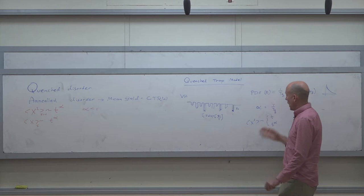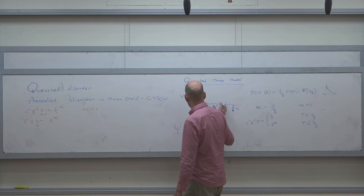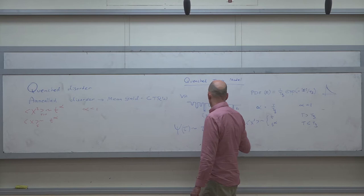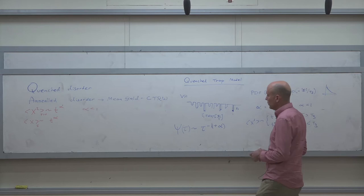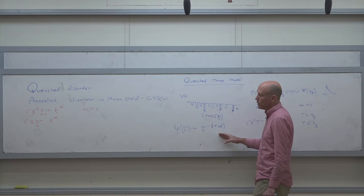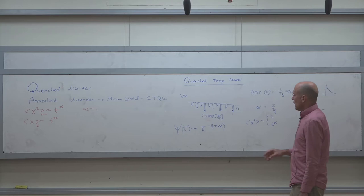What we showed in the previous class is that by averaging, the waiting time PDF for large times decays like a power law with exponent -(1+alpha). This was done by a change of variables: assuming exponential energy distributions and using the Jacobian to find the distribution of tau_i. Alpha again equals T over T_g. When alpha is less than one you get anomalous diffusion; when alpha is greater than one you get normal diffusion.